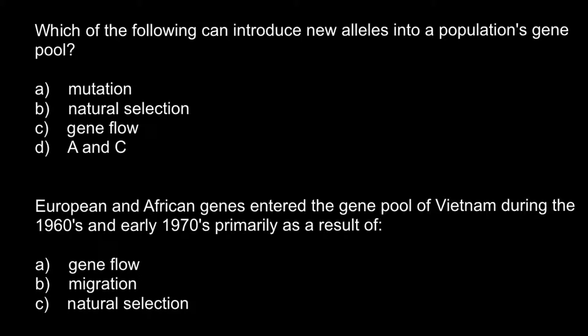Here is the first question: Which of the following can introduce new alleles into the population's gene pool? Here are four answers to choose from: Answer A — mutation, B — natural selection, C — gene flow, and D — none of the above.